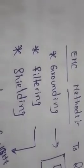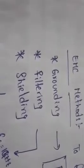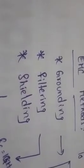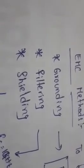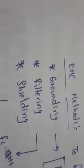Hi students, welcome back. Now we are going to discuss EMC methods: grounding, filtering, and shielding. These three methods are used to reduce EMI, that is electromagnetic interference. Now coming to the first one — the grounding method.